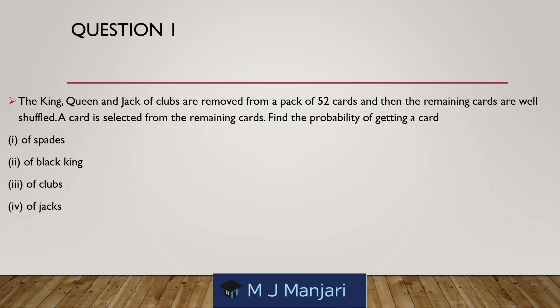First question. The king, queen and jack of clubs are removed from a pack of 52 cards and then the remaining cards are well shuffled. A card is selected from the remaining cards. Find the probability of getting: 1st, a spade; 2nd, a black king; 3rd, a club; 4th, a jack.